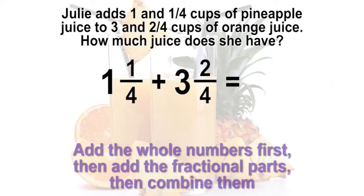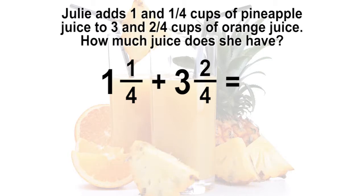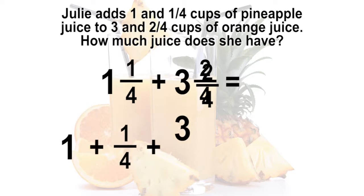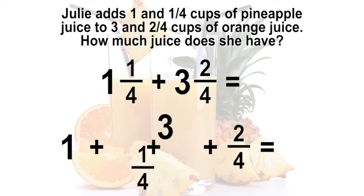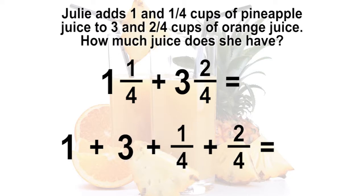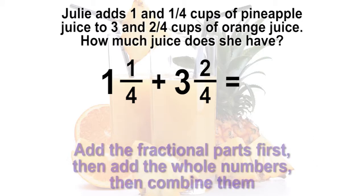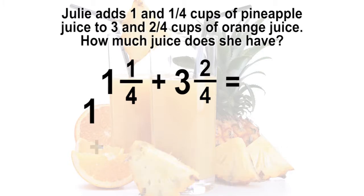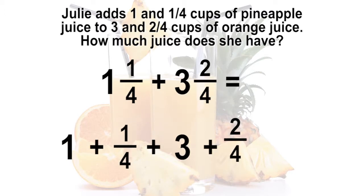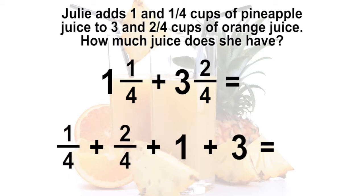Another strategy would be to add the whole numbers first, then add the fractional parts, then combine them. One and one-fourth plus three and two-fourths equals one plus one-fourth plus three plus two-fourths. Using the properties of addition, the addends can be combined in any order, so the problem becomes one plus three plus one-fourth plus two-fourths, which equals four and three-fourths. We could also add the fractional parts first, then add the whole numbers last: one-fourth plus two-fourths plus one plus three equals four and three-fourths.